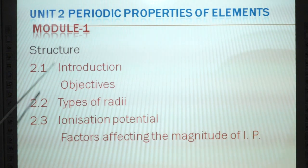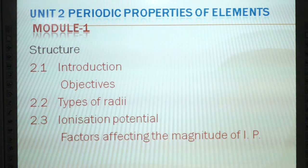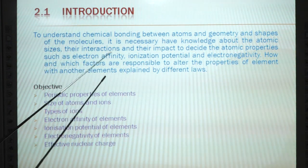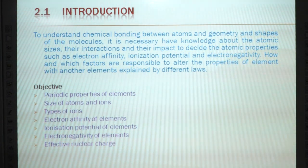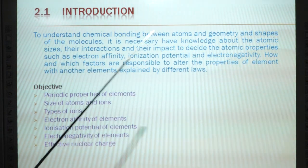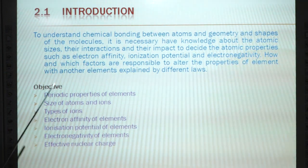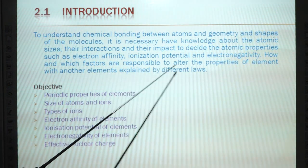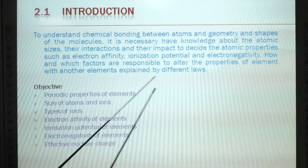In Module 2 we study Introduction, Objective, Type of Radii, Ionization Potential, and Factors Affecting the Magnitude of Ionization Potential. Introduction: To understand the chemical bonding between atoms and geometry and shapes of the molecule, it is necessary to have knowledge about atomic size and their interactions and their impact to decide the atomic properties such as electron affinity, ionization potential, and electronegativity. Different laws explain how and which factors are responsible to alter the properties of elements.